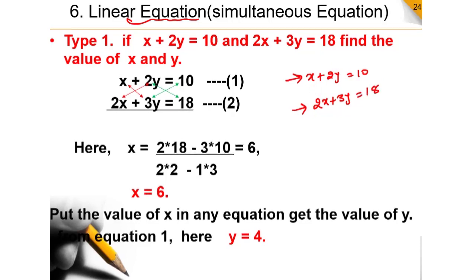So I am going to solve it. The general method to solve the question is: we make the coefficient values the same. For example, the coefficient of x in the first equation is 1 and in the second equation is 2. So I am going to multiply the first equation by 2, so the coefficient of x in both cases will be the same. The other method is to make the coefficient of y the same — in that case, the y coefficients are 2 and 3.